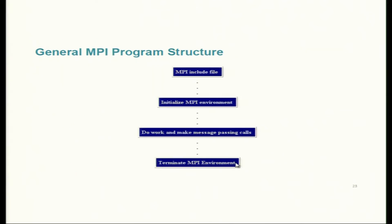The general flow of an MPI program: include the header file, initialize the MPI environment, do the work and make MPI calls for communication, then terminate the MPI environment. When we terminate the MPI environment, parallel processes still exist — we haven't terminated the processes, only the MPI environment. These processes can still do work but they won't be able to talk to each other — no more communication.